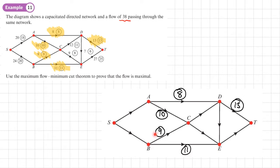The saturated arcs are marked on the diagram. We're looking for a cut that passes only through saturated arcs going from S to T, or zero arcs going from T to S. The cut doesn't need to go through all saturated arcs, but it can only pass through saturated arcs or those zero arcs going the other way.